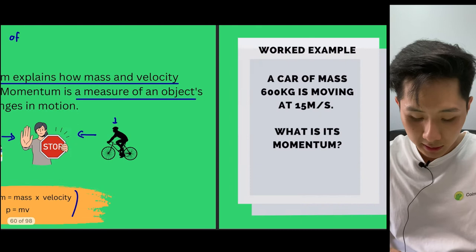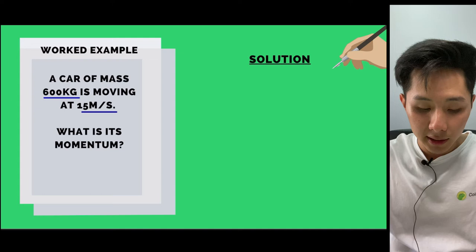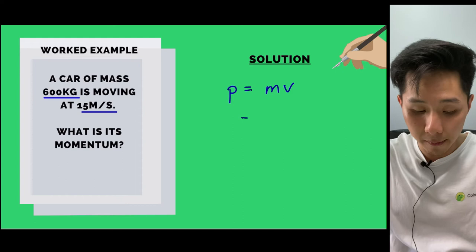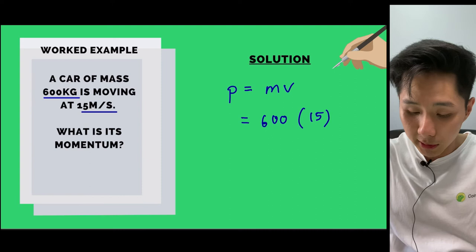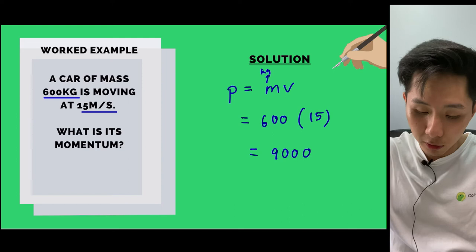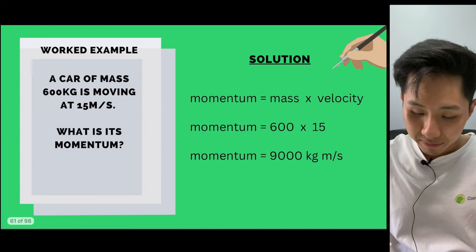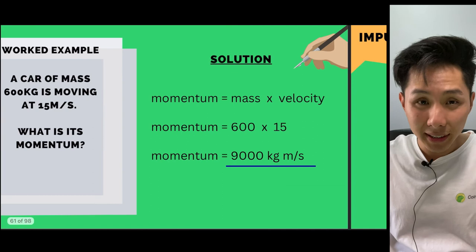Worked example: a car of mass 600 kg moving at 15 m/s. To calculate momentum: p = mv = 600 × 15 = 9,000 kg m/s. The unit for momentum is kilogram metre per second, obtained by multiplying the units of mass and velocity together.